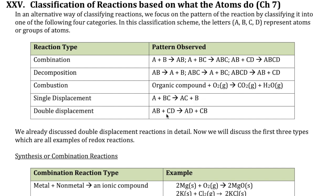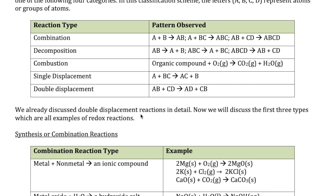Double displacement is this pattern right here, AB plus CD, and then the two cations are swapped to form AD and CB. We already talked about double displacement in detail in the prior videos. The two subcategories of double displacement are precipitation and acid-base. Now we're going to take a look at the other types of reactions that are listed here.